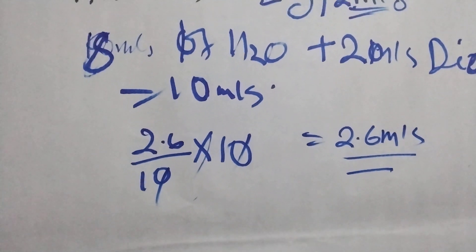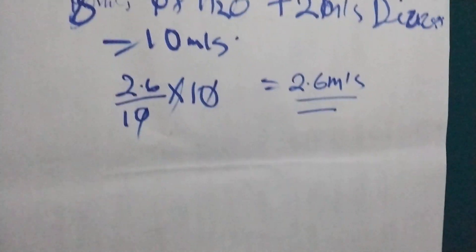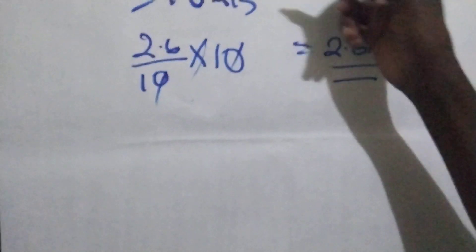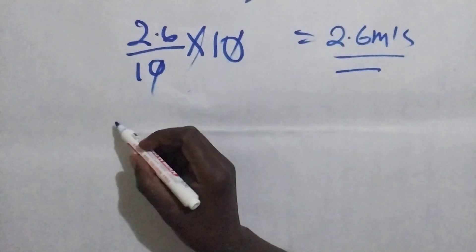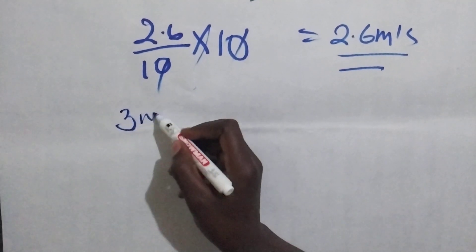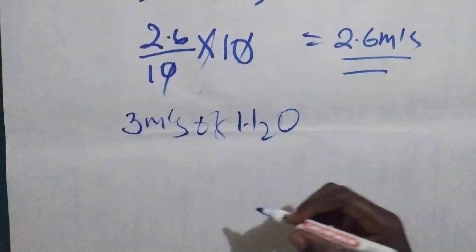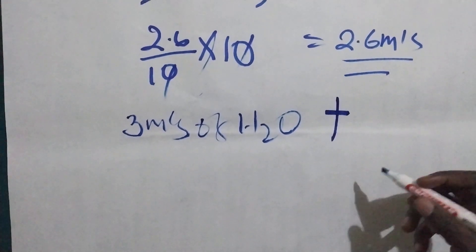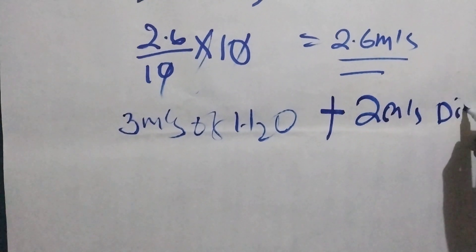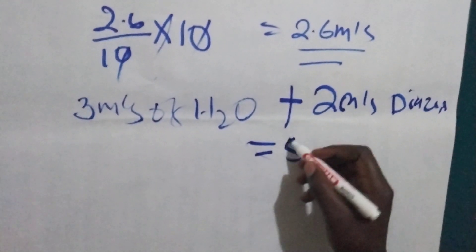How about if the child is something like 7 years or 8 years? For 5 and above, what we are going to do is change the dilution. We are going to use 3 mils of water for injection plus 2 mils of Diazepam. So our dilution will become 5 mils.